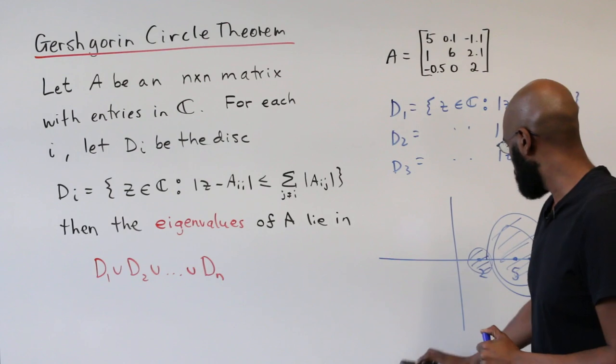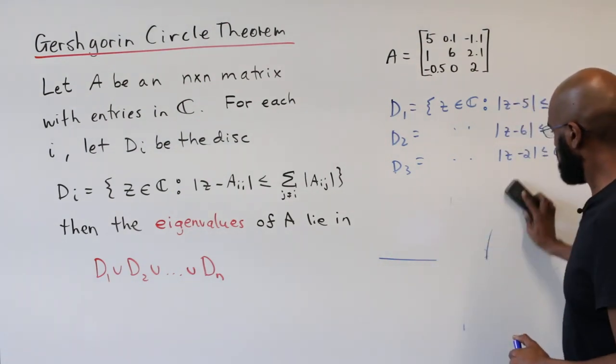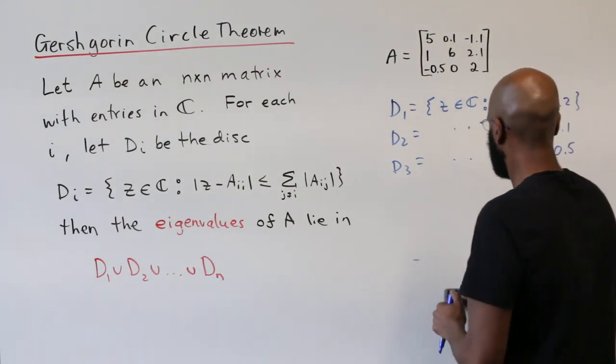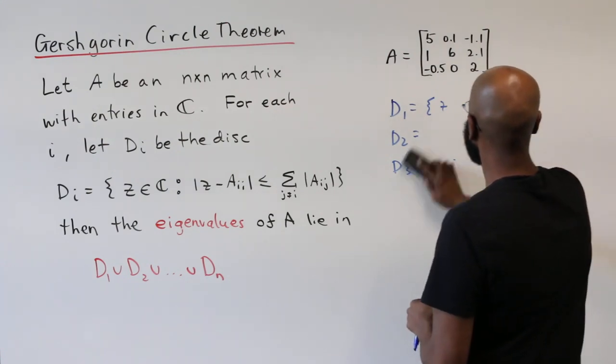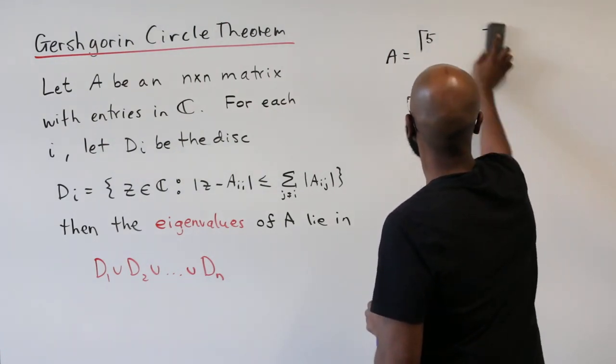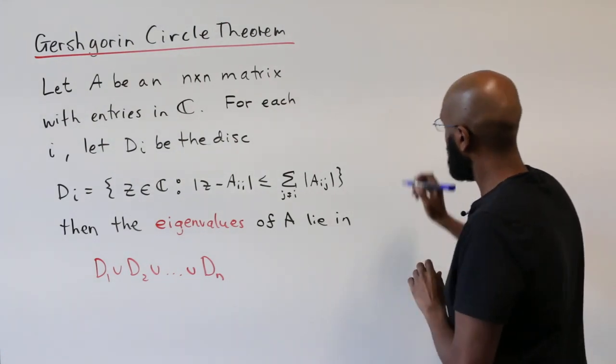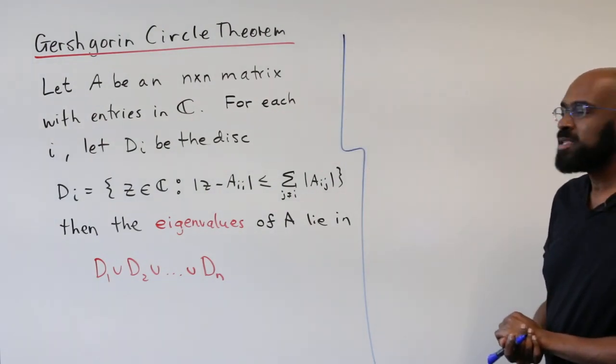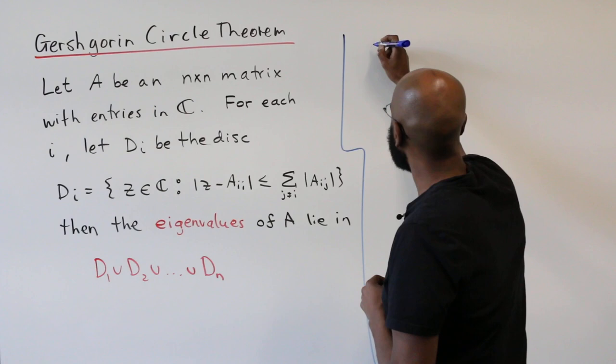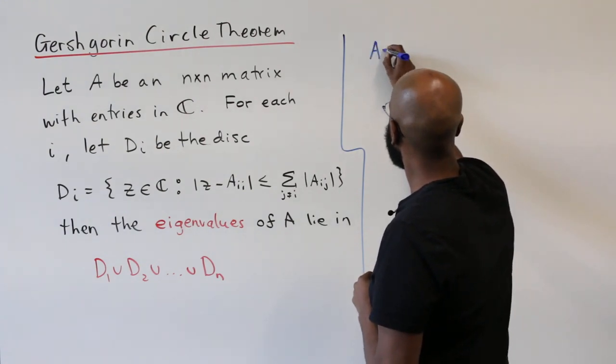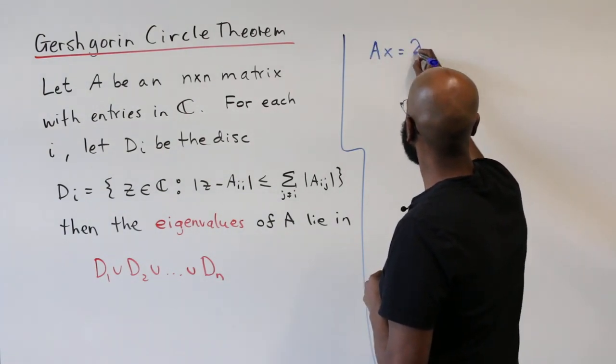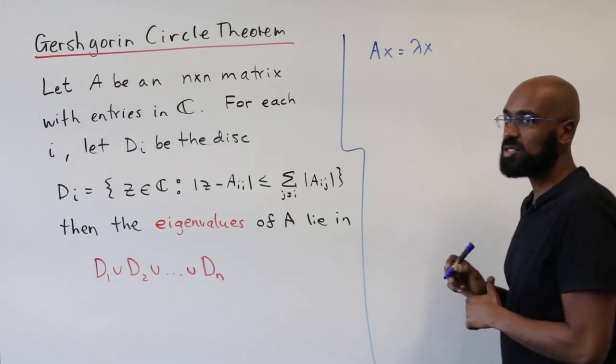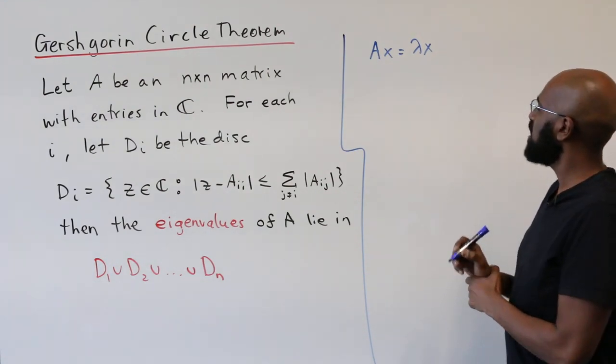Okay, so let's give a proof of this theorem to get a sense of why it's true. And then see some interesting consequences of it. Alright, so say we had an eigenvalue lambda, then that means that there's a corresponding eigenvector x, so A x is lambda x.